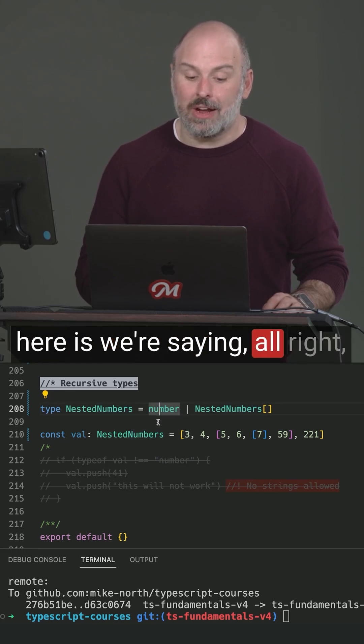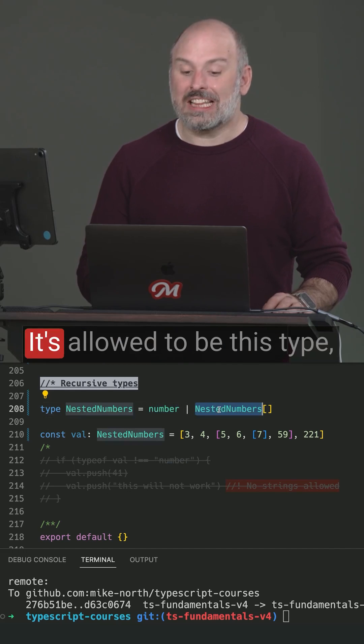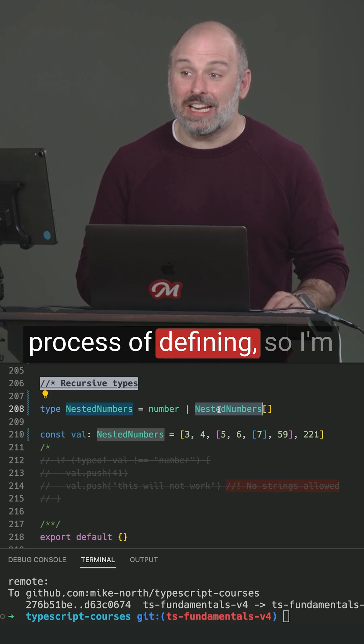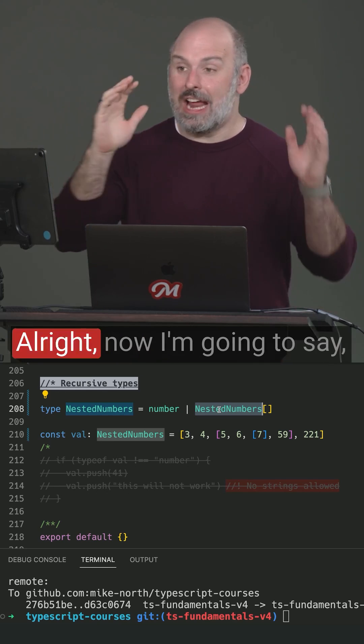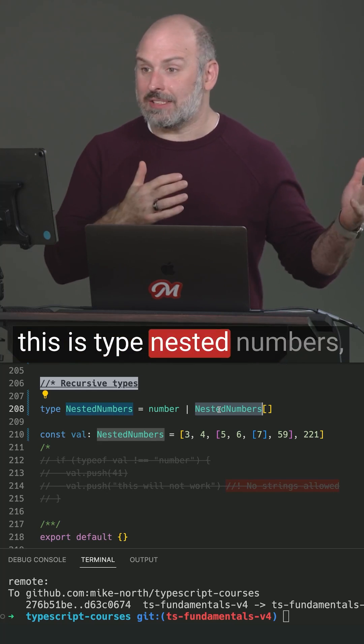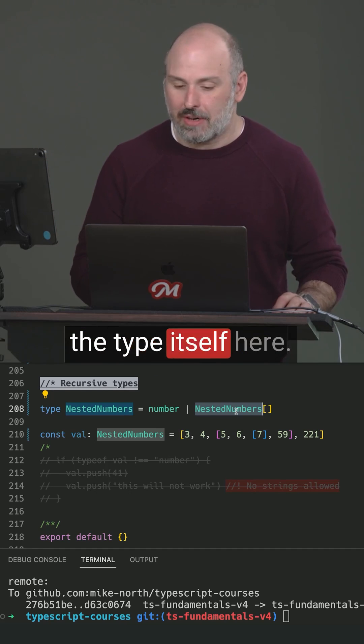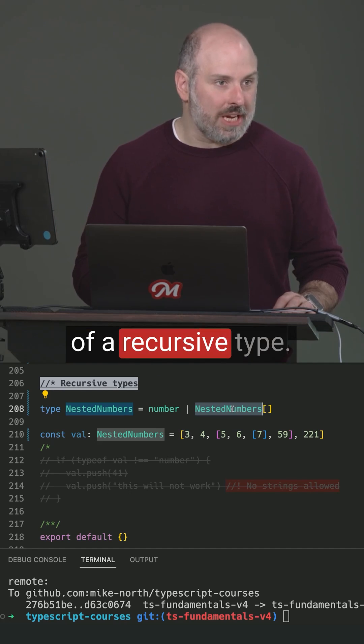And so what's happening here is we're saying, alright, it's allowed to be a number. It's allowed to be this type, which I know we're in the process of defining. So I'm going to put a pin in that. Alright, now I'm going to say this is type nested numbers and it sort of all fits together. It's almost like you can just reference the type itself here. This is an example of a recursive type.